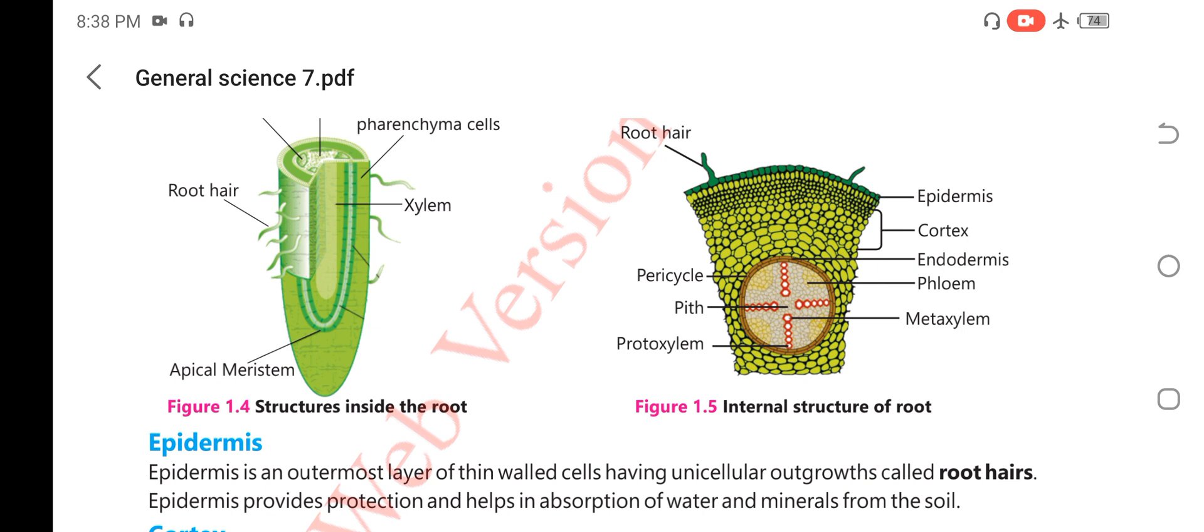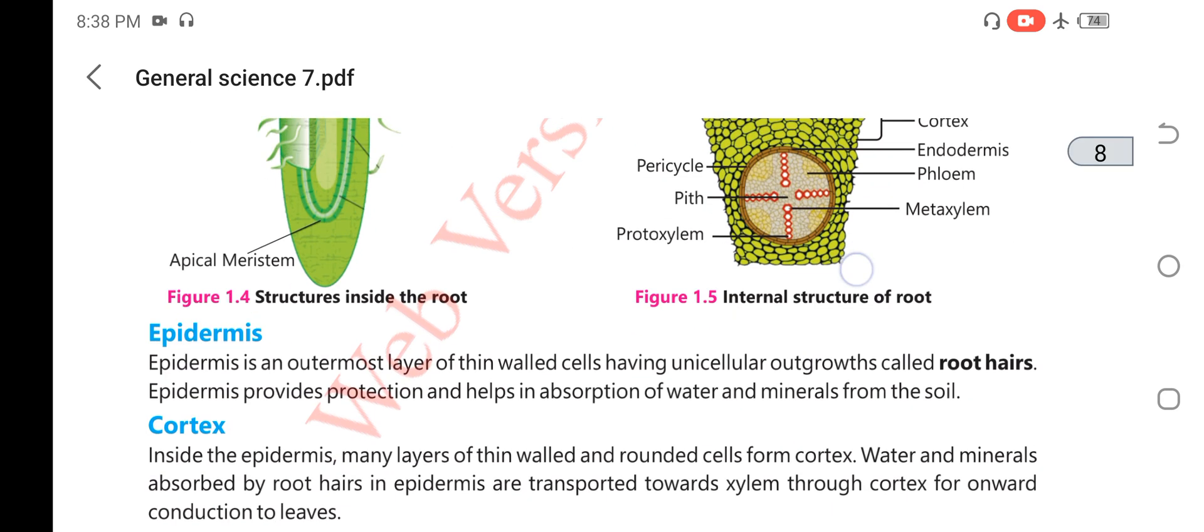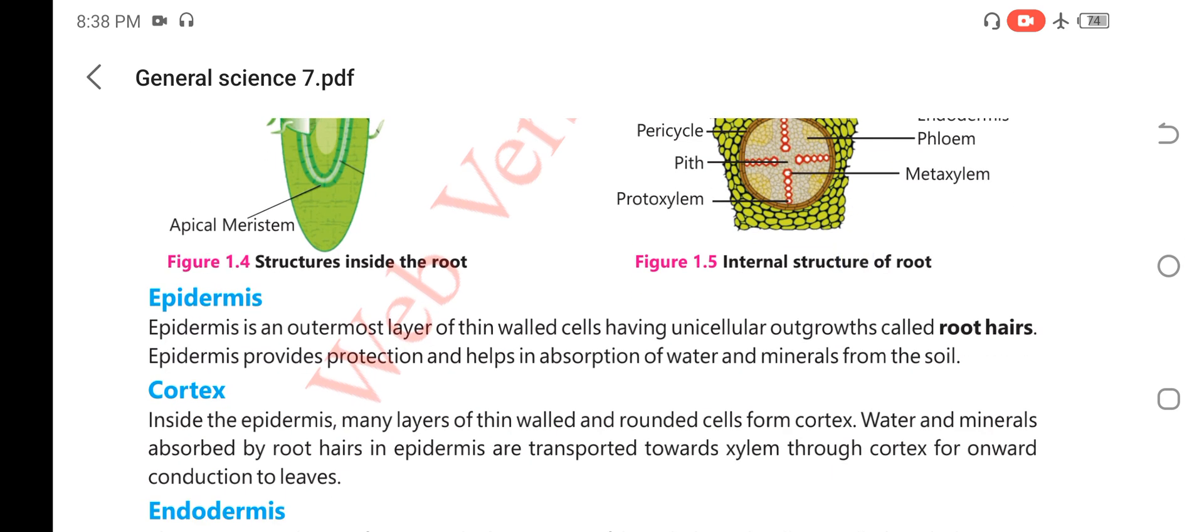Here you can see the cortex which has different-sized cells, some small and some large. Many layers of thin-walled and round cells form the cortex. Water and minerals absorbed by the root hairs in epidermis are transmitted to the xylem through cortex for onward conduction to leaves.